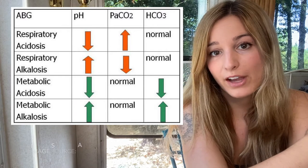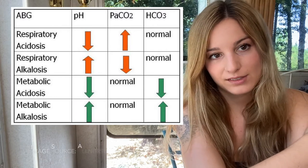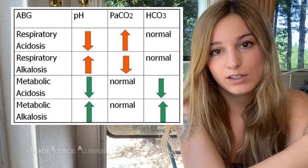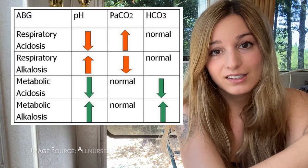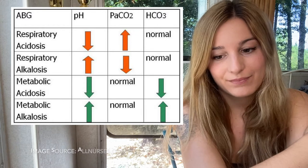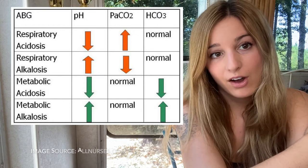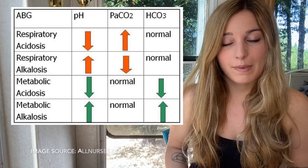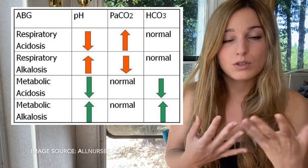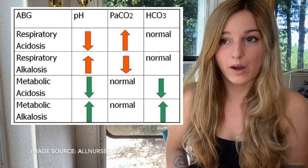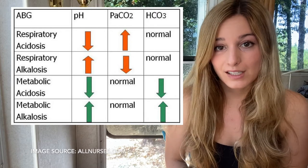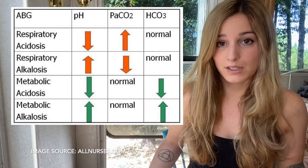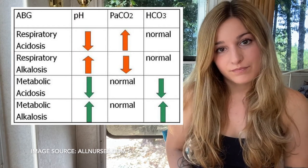Respiratory acidosis: the pH is low, so it's going to be under 7.35. The carbon dioxide, on the other hand, is high — above 26. The bicarb is normal. Causes include respiratory depression, which can come about through drugs like opioids when your breathing really slows down to the point where the body becomes acidic, central nervous system trauma such as brain injury or spinal cord injury, and COPD, among many other diagnoses.